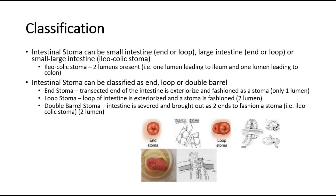In an end stoma, the transected end of the intestine is exteriorized and fashioned as a stoma with only one lumen. In a loop stoma, a loop of intestine is exteriorized and a stoma is fashioned with two lumens. In a double barrel stoma, the intestine is severed and brought out as two ends to fashion a stoma with two lumens.